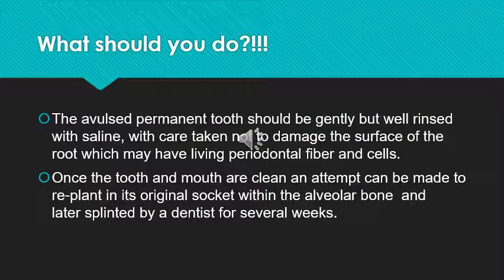When such an avulsion happens in your household or to your friends or to your kids, what are you supposed to do? The avulsed permanent tooth should be gently but well rinsed with saline. Take care not to damage the surface of the root, because these roots will still have some viable living fibers and cells. When you tend to wash or rinse the tooth and rub the root, you may damage these fibers which are still alive. So once the tooth and the mouth are clean, you can attempt to place it back in the socket where it was originally within the bone, and the patient can be referred to a dentist office.